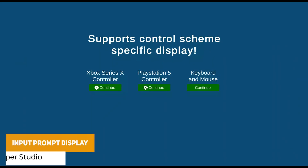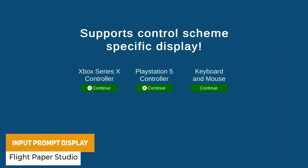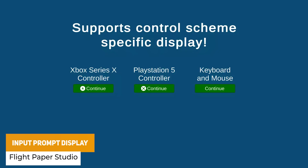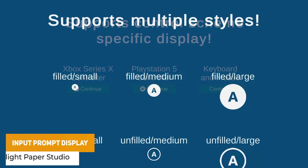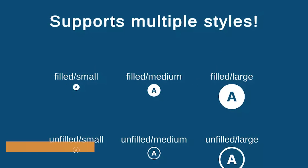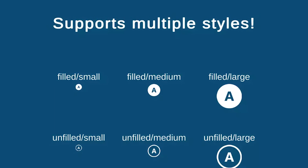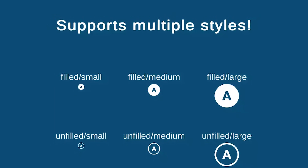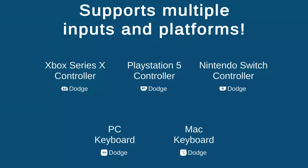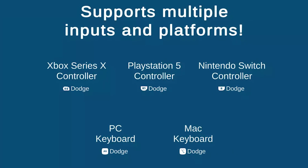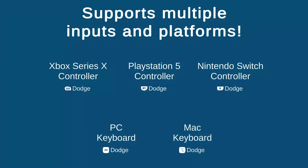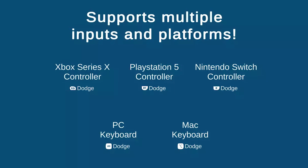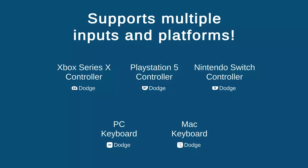The last one in this list is the Input Prompt Display. Unity's input system doesn't have anything built in by default, but this allows you to easily display key bindings when using the Unity UI system — for example, if something requires you to press X on a keyboard, you can transfer this to a gamepad to then show A at the same time.